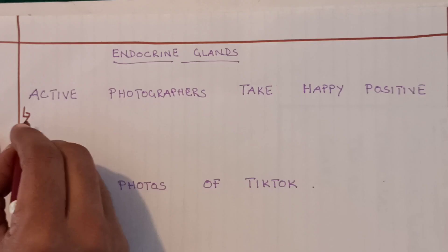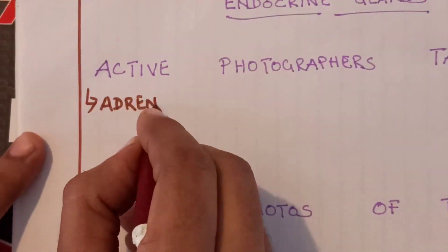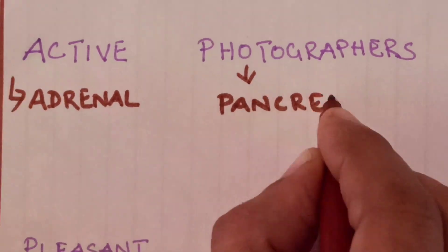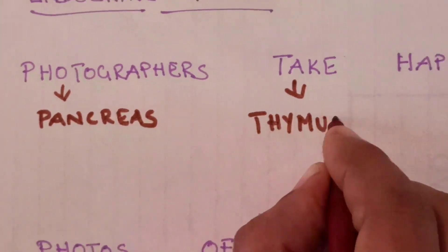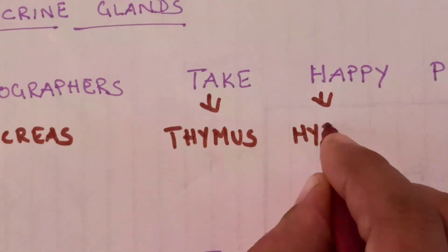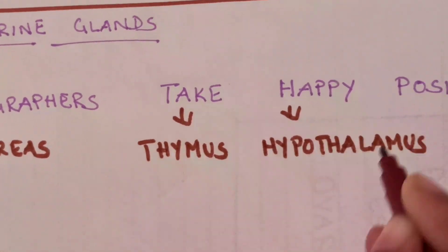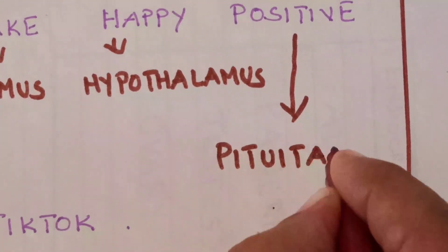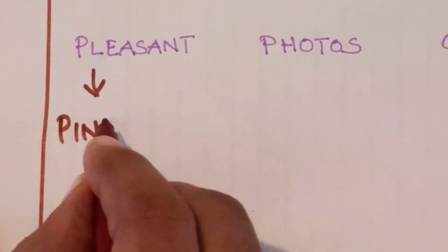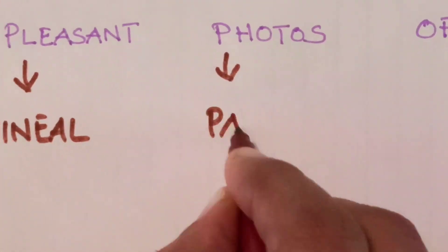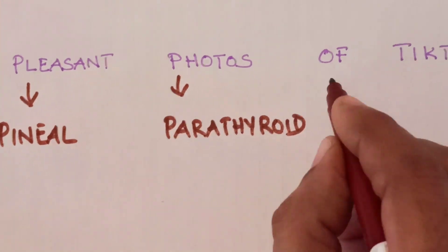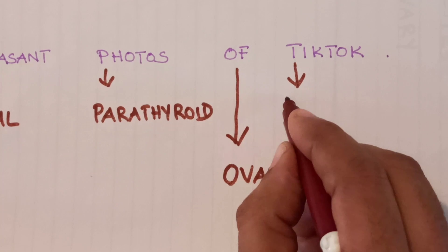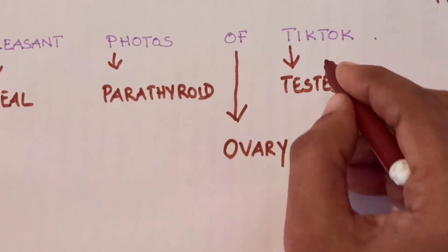Here, 'Active' stands for adrenal glands, 'Photographers' for pancreas, 'Take' for thymus, 'Happy' for hypothalamus, 'Positive' for pituitary, 'Pleasant' for pineal and parathyroid, 'Photos' for ovary, and 'Of Tik-Tok' for testis and thyroid.